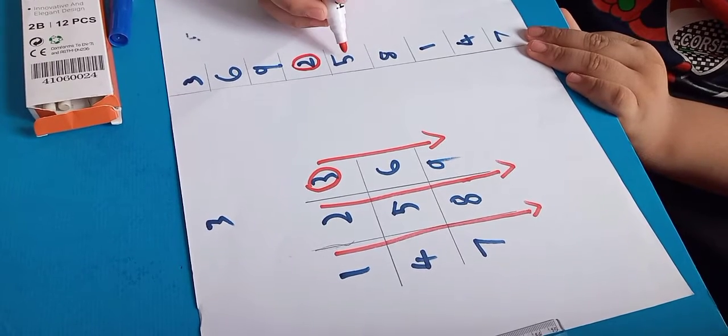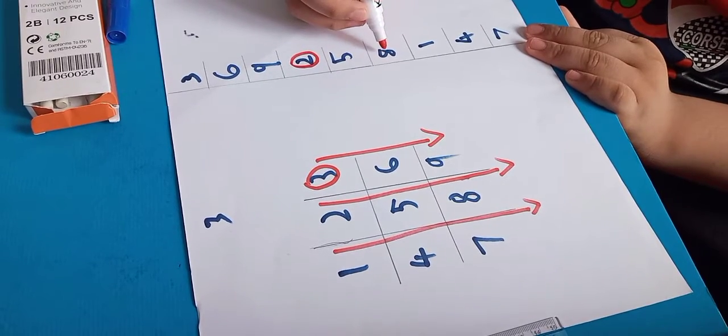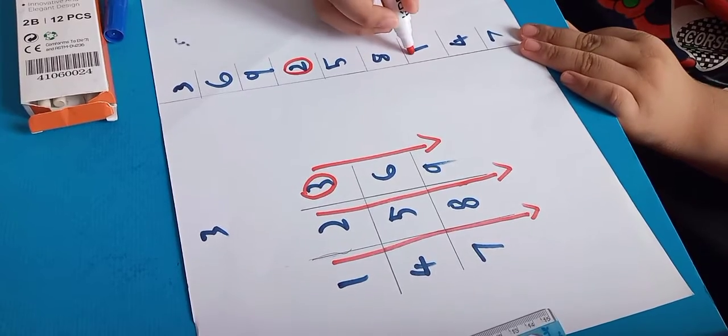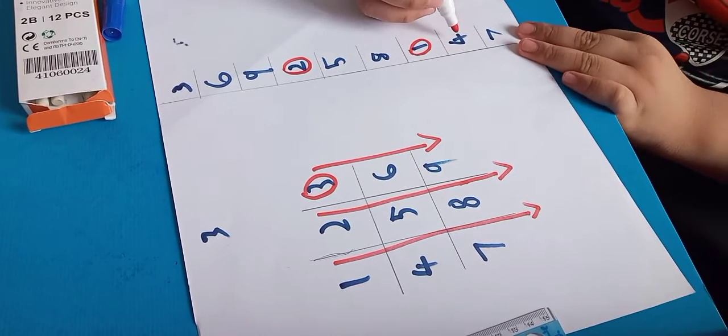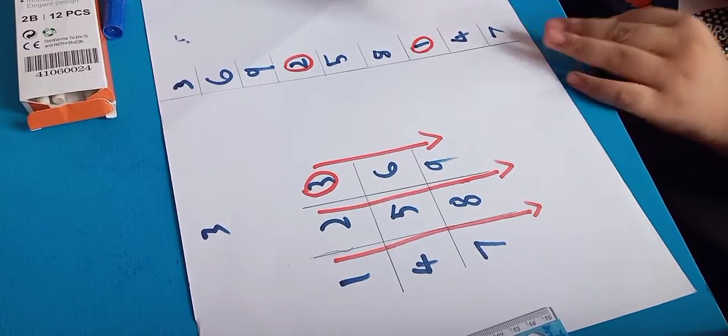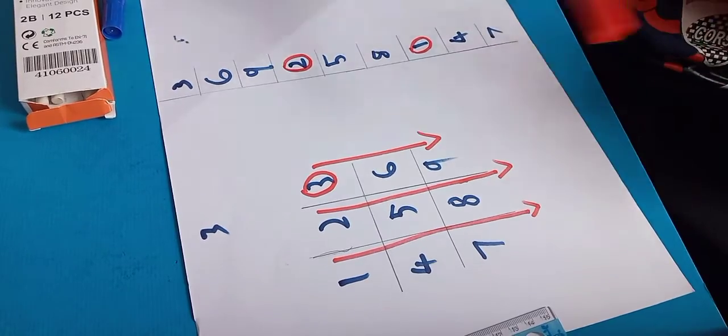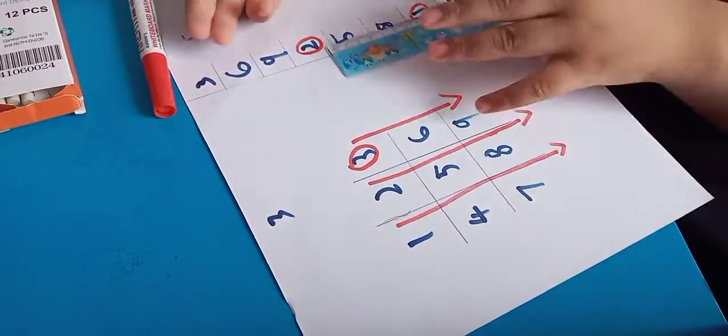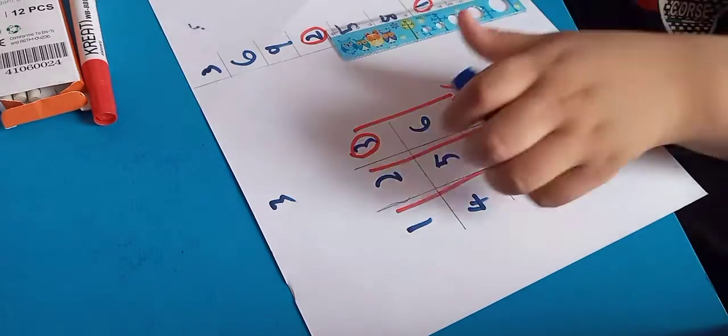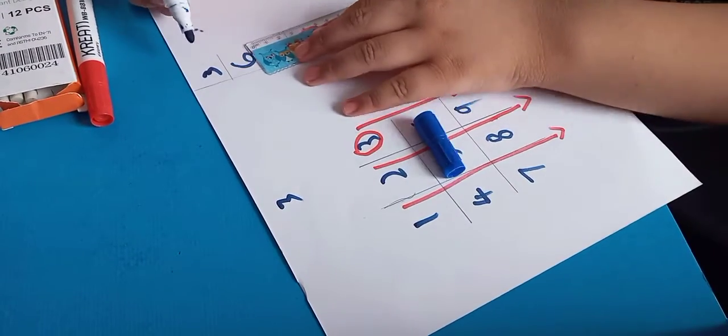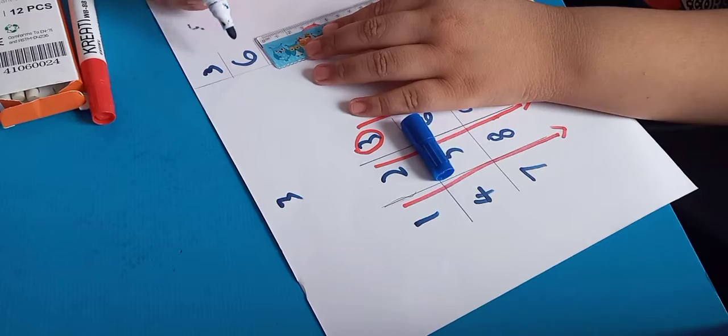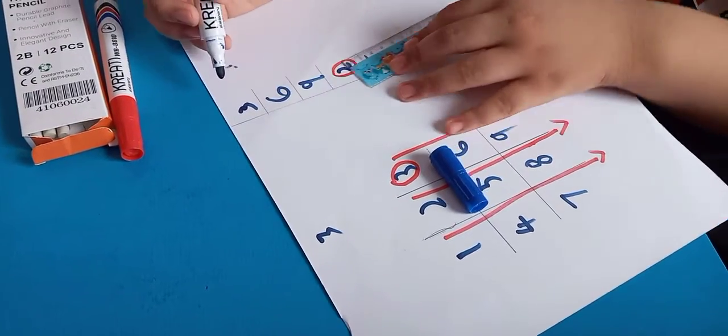Next, let's count the amount of circles. Are there any circles? None. Are there any circles? None. How many circles are there? One. Are there any circles? Yes, one.